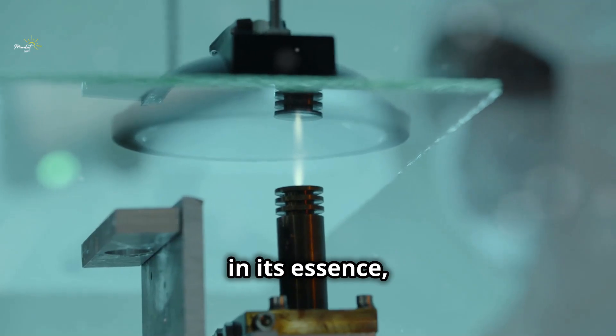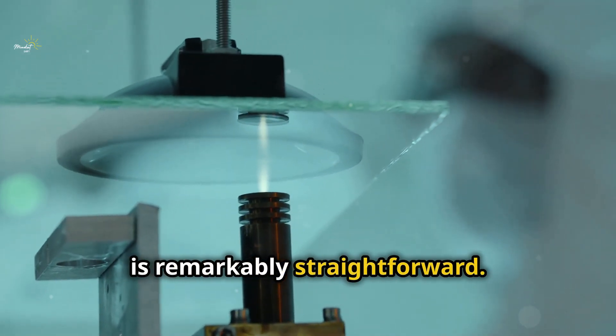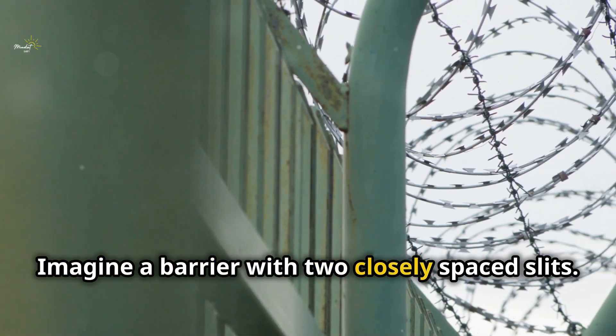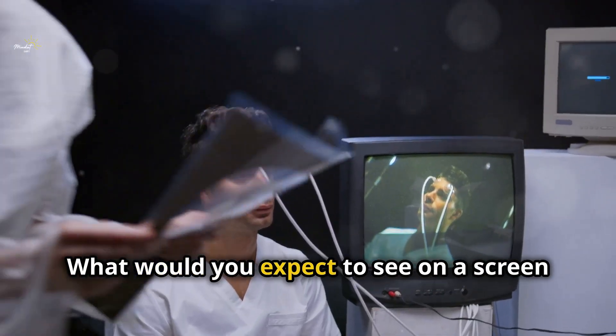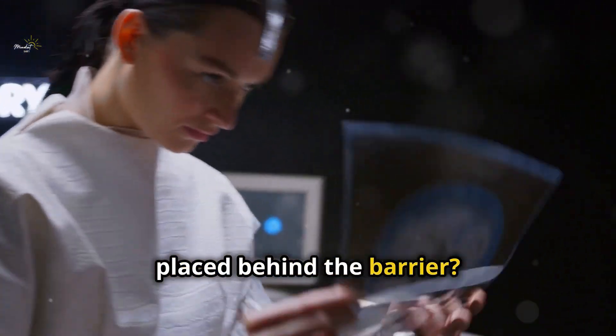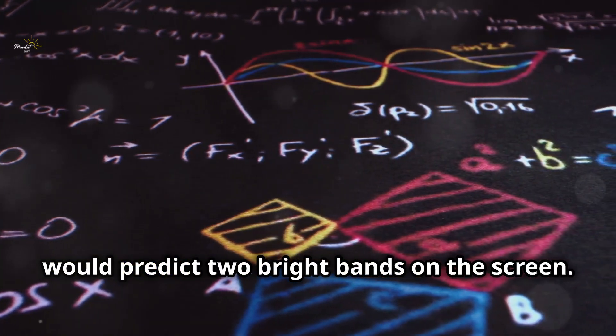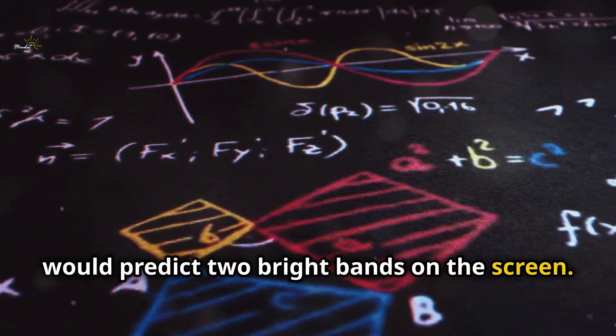The double-slit experiment, in its essence, is remarkably straightforward. Imagine a barrier with two closely spaced slits. Shine a light source at the barrier. What would you expect to see on a screen placed behind the barrier? Common sense and classical physics would predict two bright bands on the screen. These bands would correspond to the light passing directly through the two slits.